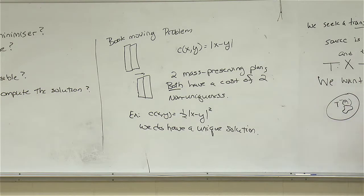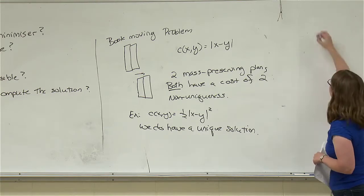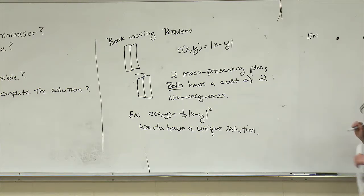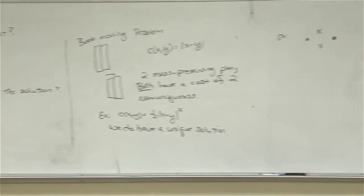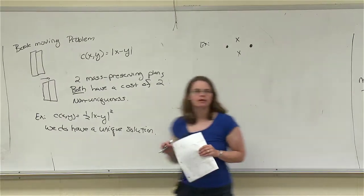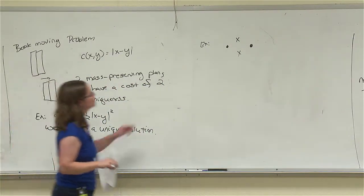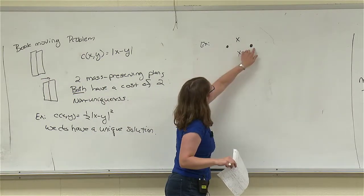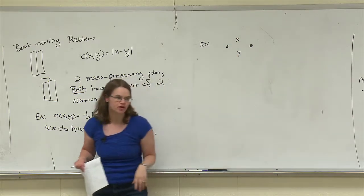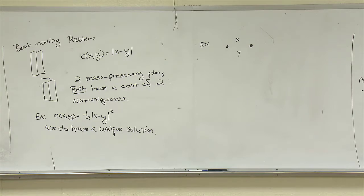It turns out the quadratic cost is much easier to deal with in general. A lot of our time this semester will be focused on quadratic cost — this is where most past work has been done. The linear cost doesn't fit the usual regularity assumptions, and non-uniqueness is certainly an issue. Even for quadratic cost we could have non-uniqueness: if we have a source with two Dirac masses and a target with two Dirac masses at symmetric positions, both assignment patterns have the same cost.